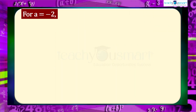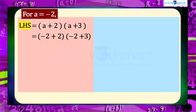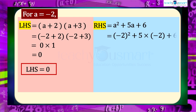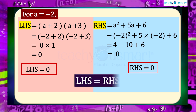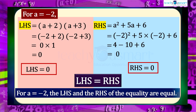If we put a = -2, LHS = (-2+2)(-2+3) = 0 × 1 = 0. The RHS = (-2)² + 5(-2) + 6 = 4 - 10 + 6 = 0. Therefore LHS = RHS. For a = -2, both sides are also equal.